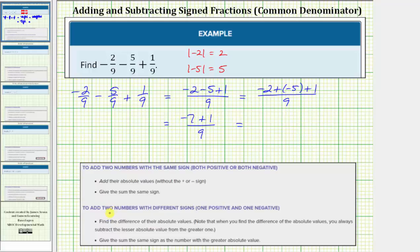We'll use the rules for adding two numbers with different signs. Step one, we find the difference of their absolute values. And then step two, we give the sum the same sign as the number with the greater absolute value.